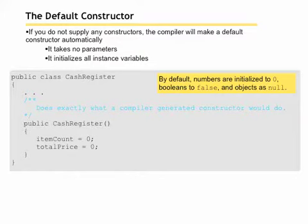The default constructor does not take any parameters. If you do not supply any constructors, the compiler will make a default constructor automatically. It takes no parameters and initializes all the instance variables.